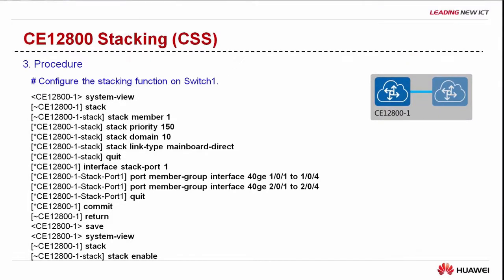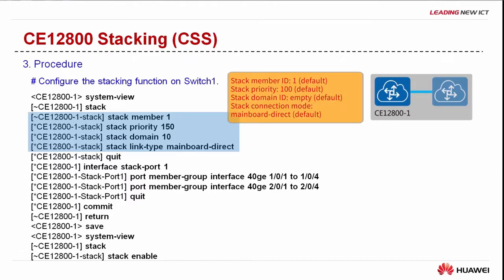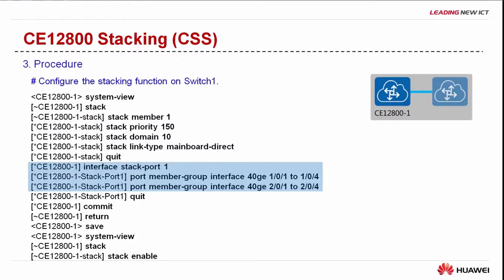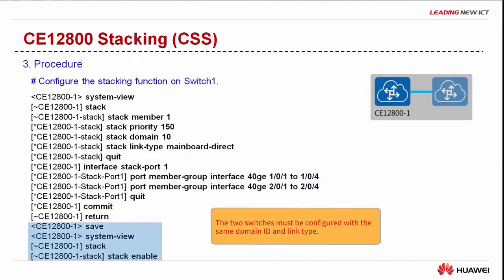First, configure the stacking function on switch 1. Log in to the switch and configure stack attributes on it, including the stack member ID, stack priority, stack domain ID, and stack connection mode. Create a logical stack port and add physical member ports to it. These physical member ports are connected to forwarding links. After you complete the preceding configurations, save the switch configuration and enable the stacking function.